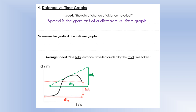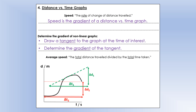Distance versus time graphs are often non-linear, so to work out speed we need to find the gradient of a curved graph. We do that by drawing a tangent — shown in green on the graph. If we want to know the speed at five seconds, we draw a tangent to the graph at five seconds and then find the gradient of that tangent. There's also average speed, which is the total distance traveled divided by the time taken.